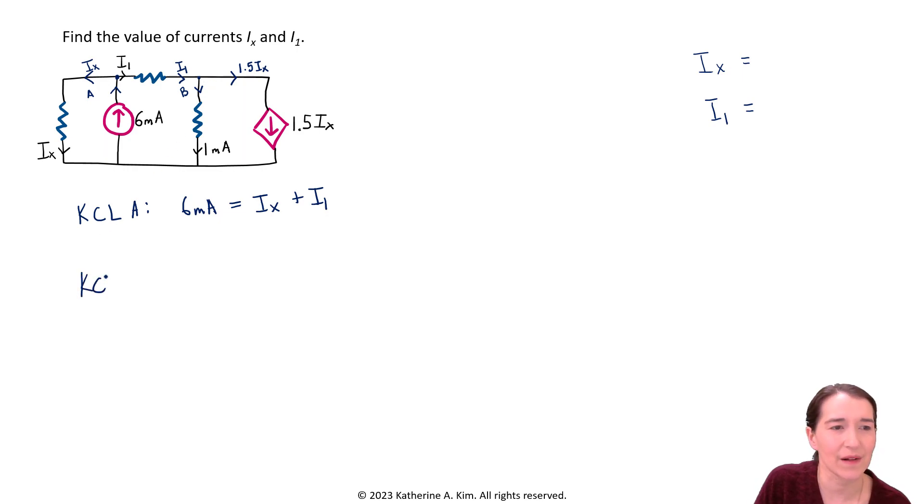Kirchhoff's current law at intersection B here. So KCL at this second intersection at the node. And we see we have I1 is the current coming in. And then you have two currents coming out. One is going to be one milliamp, and then the other is going to be plus 1.5 IX.